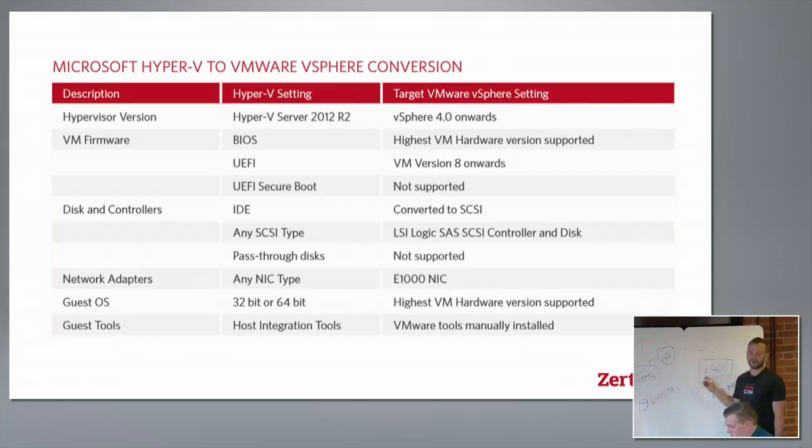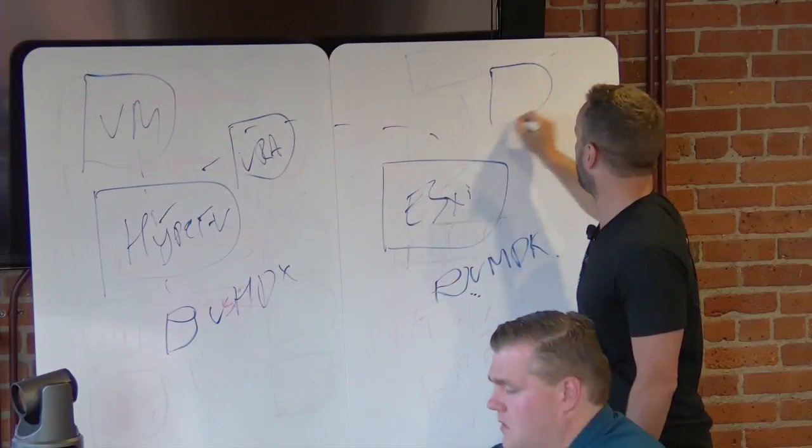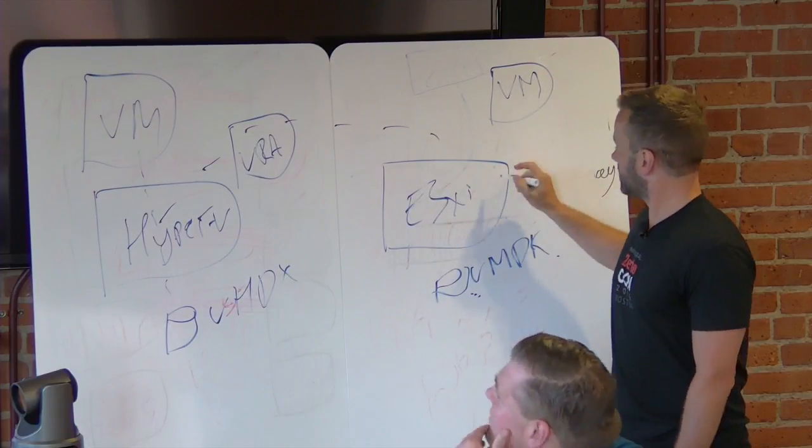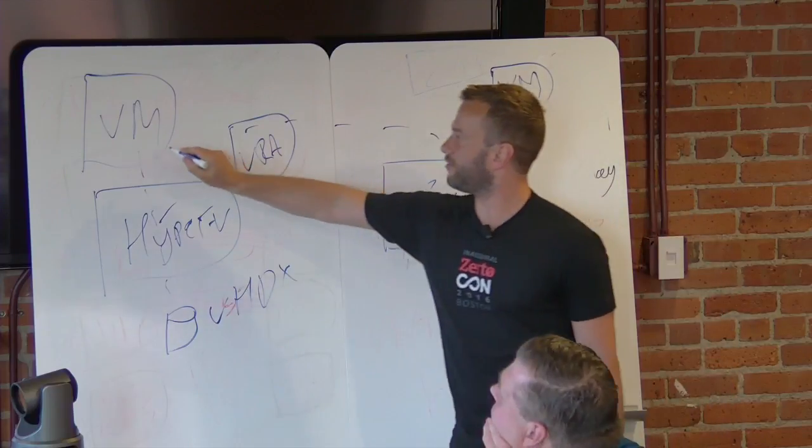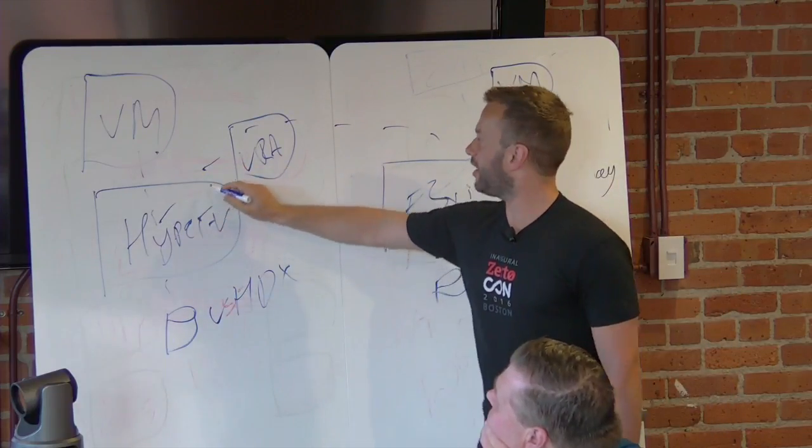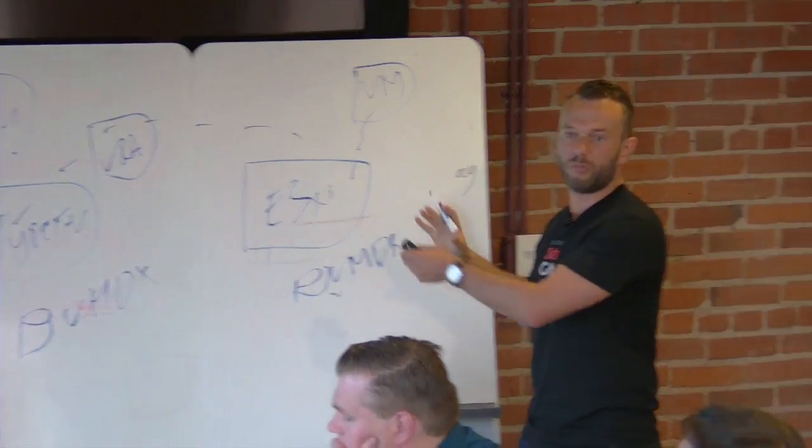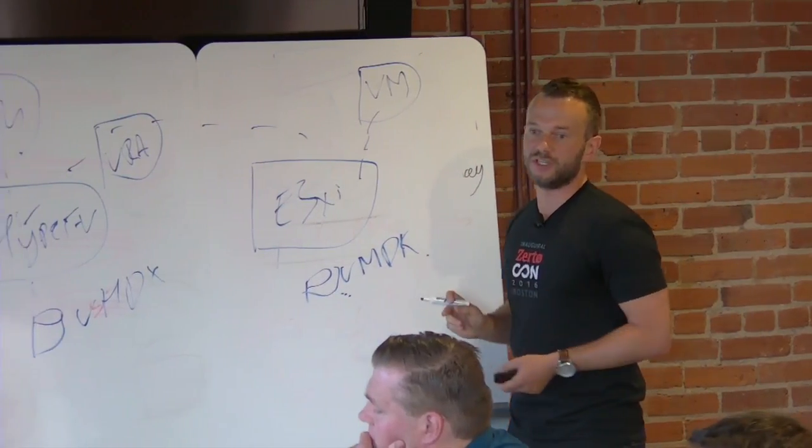But the beauty of this setup here is that if you want to test this conversion process, we have failover testing. We can bring a copy of the VM online in an isolated port group or network, and you can see without ever shutting down the VM in production and without ever breaking the replication stream how your VMs now perform and behave and what processes you need to go through to get them running in the VMware environment.